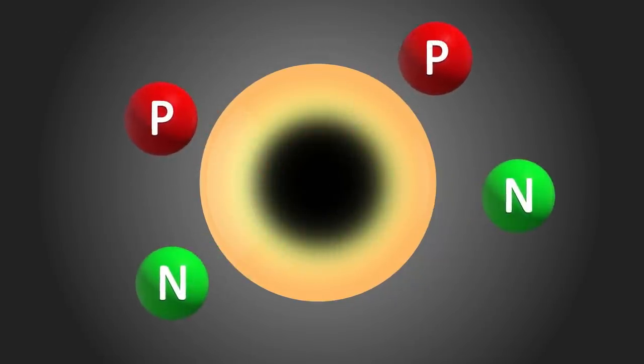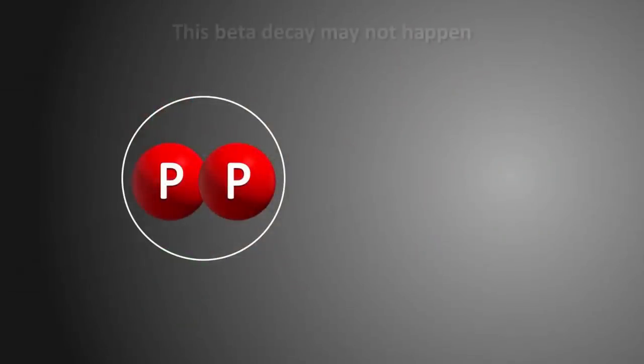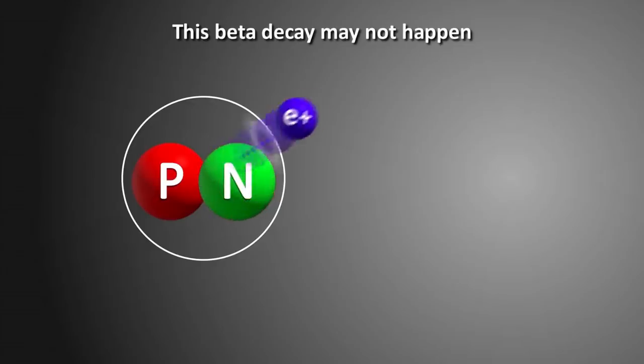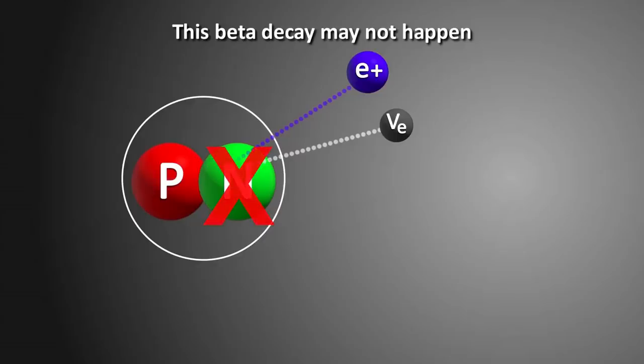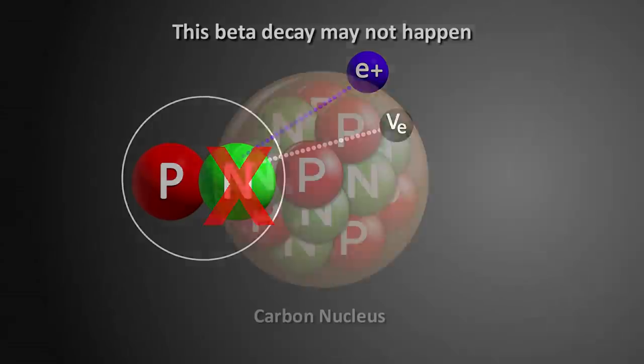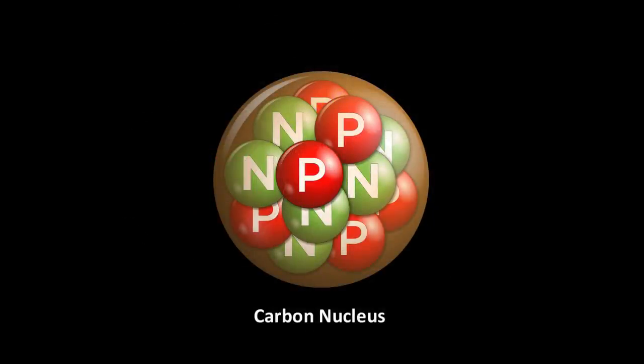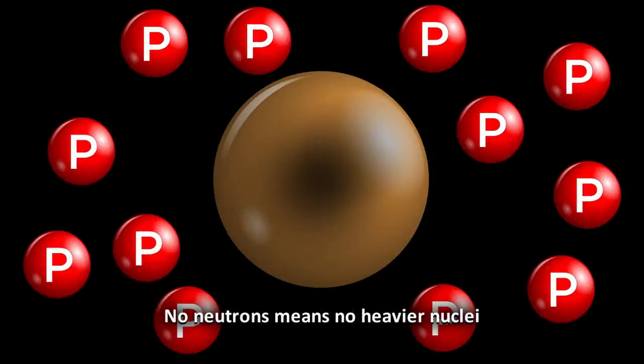If on the other hand the strong force was 2% stronger, no atoms might form, and we could be stuck with only hydrogen atoms. The reason for this is that the strong force would overpower the beta decay that is necessary for protons to be transmuted to neutrons. Neutrons are crucial to make the nucleus stable for larger atoms to form. If neutrons can't be formed, then all the heavier atoms beyond hydrogen and helium that we need for life may not form.